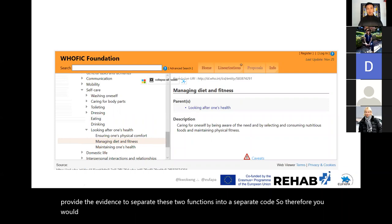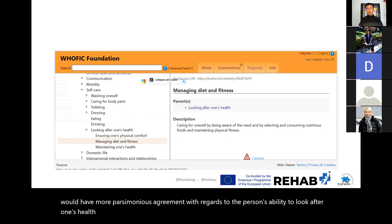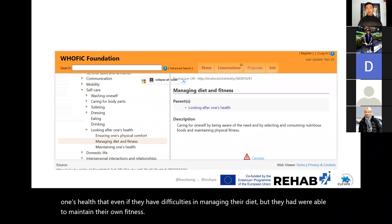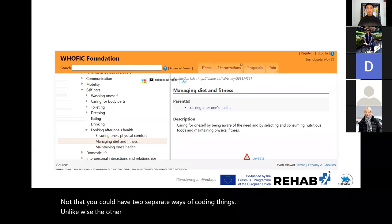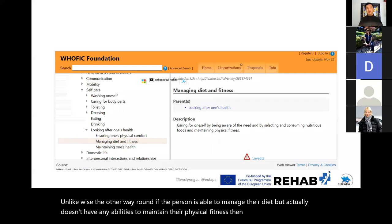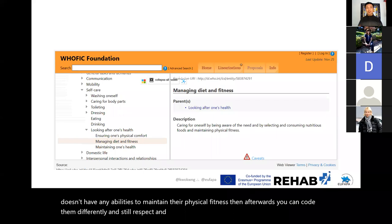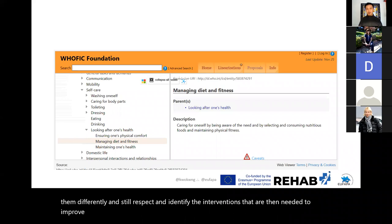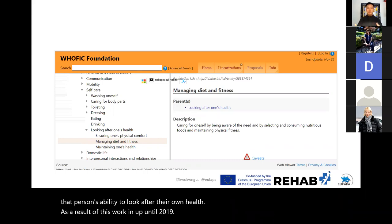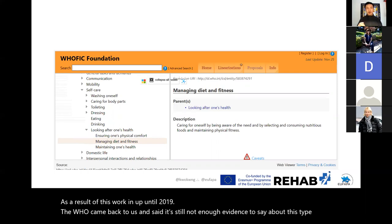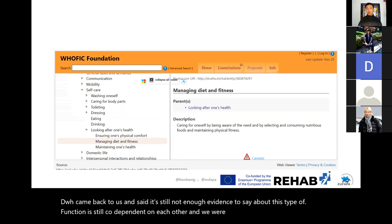The goal was to have more parsimonious agreement: even if they have difficulties in managing their diet but were able to maintain their own fitness, you could have two separate ways of coding things — and likewise the other way around. As a result of this work up until 2019, the WHO came back and said it's still not enough evidence to say this function is independent; the two are still codependent on each other. We were very surprised by this.